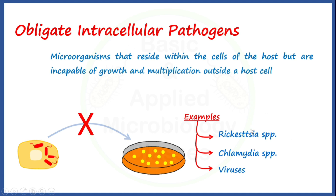Rickettsia is known to cause Rocky Mountain spotted fever and typhus. Chlamydia is known to cause chlamydia infection. Regarding viruses, you should know that all viruses are obligate intracellular type of pathogens, meaning a host cell is a mandatory requirement to favor the growth of viruses when culturing them in vitro.